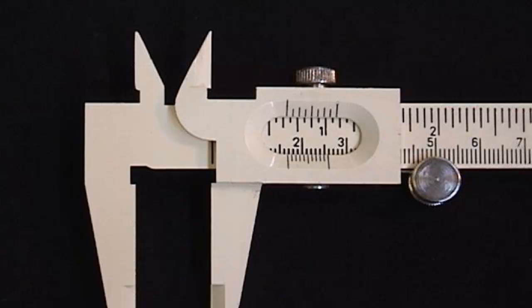Alright, we're going to take a minute and learn how to use a caliper. So a caliper allows us to measure with extra precision over a ruler. And here's kind of how it works.